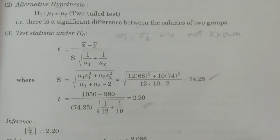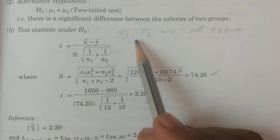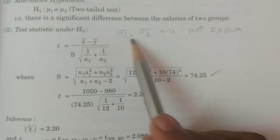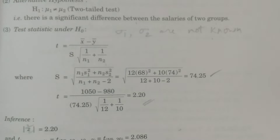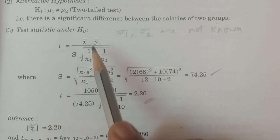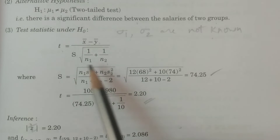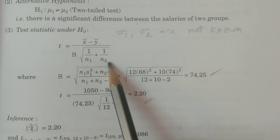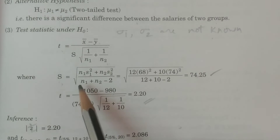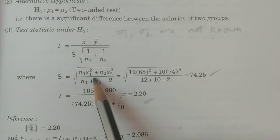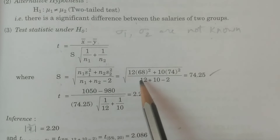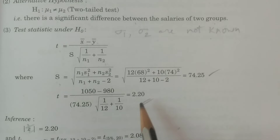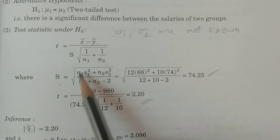Test statistic under H0. This is the second case: sigma1 and sigma2 are not known. The formula is: square root of (n1·S1² + n2·S2²) divided by (n1 + n2 − 2). This is the pooled variance formula.